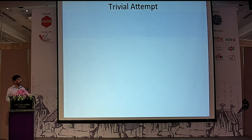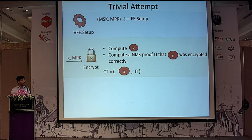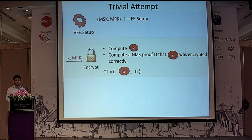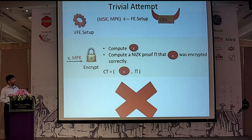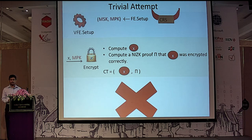First, let us see whether the problem is trivial. Given an underlying FE scheme, we run its setup to get the master secret and public keys. Whenever we want to encrypt message x, we compute the underlying encryption and compute a non-interactive zero-knowledge proof that the encryption is done correctly. If the proof verifies, we can publicly verify correctness. The catch is: to generate a NIZK proof, we need a common reference string generated at setup time. Our goal is to protect against malicious authorities, and the authority is the one generating the CRS. If it is malicious, it could generate a malicious CRS and compute fake proofs, destroying the NIZK guarantee. So we cannot use NIZK and need other techniques.